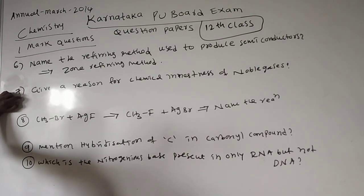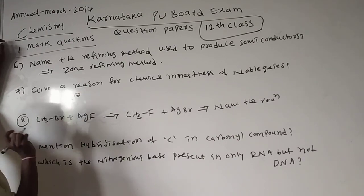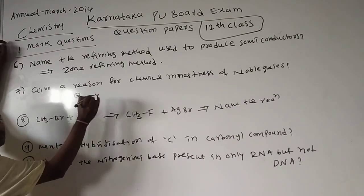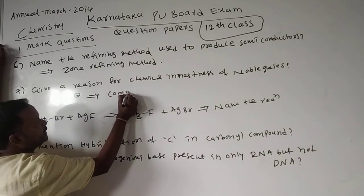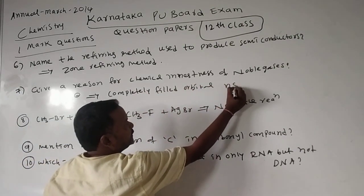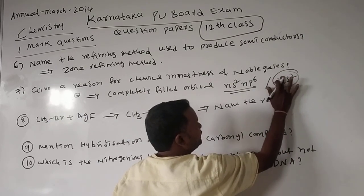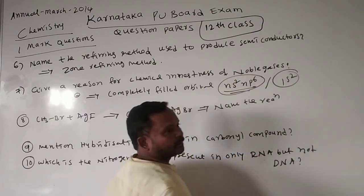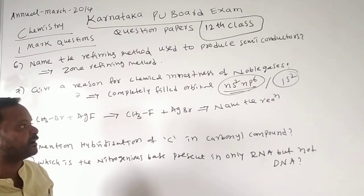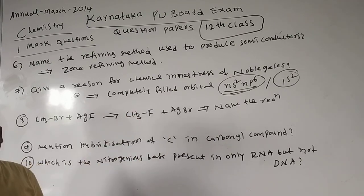Seventh question: give a reason for the chemical inertness of noble gases. In earlier times, noble gases were called inert gases, because they have eight electrons in the outer orbit — they follow the octet principle. Also, they have completely filled orbitals. The electronic configuration is ns2 np6. Only helium has 1s2. Helium also has completely filled orbitals. So all noble gases are chemically inert.